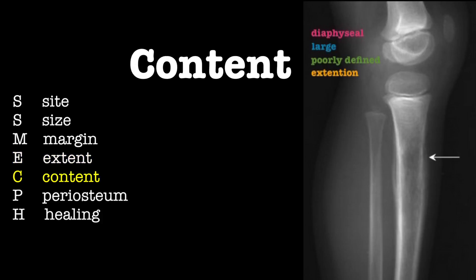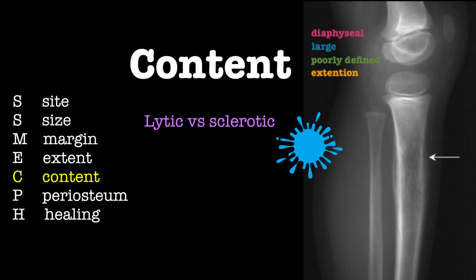C is for content. The content of the tumour may be indicative of its origin and will assist in making a diagnosis. Lesions may appear to be lytic, that is dark or black on x-ray, fluid-filled where one may see the falling fragment sign suggesting a simple bone cyst, osteoid — that is containing bone — or there may be cartilaginous content, which will only be visible if there has been calcification of the cartilage.